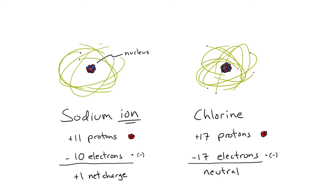The chlorine, by contrast, now has 17 protons but 18 electrons. We call this the chloride ion. Because it has one more electron than protons, it has a net charge of minus one.